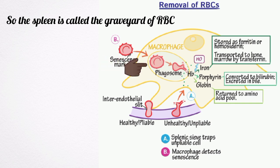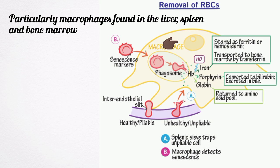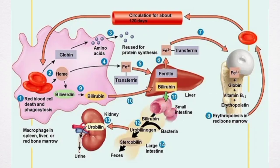Destroyed red blood cells are fragmented and hemoglobin is released. Hemoglobin is immediately phagocytized by macrophages of the body, particularly the macrophages present in the liver — that is the Kupffer cells — spleen, and bone marrow. Hemoglobin is degraded into iron, globin, and porphyrin. Iron combines with a protein called apoferritin to form ferritin, which is stored in the body and reused later. Globin enters the protein depot for later use. Porphyrin is degraded into bilirubin, which is excreted by the liver through bile.